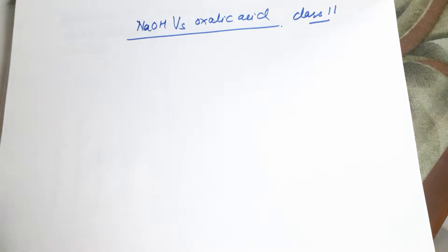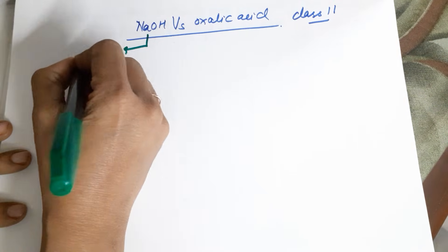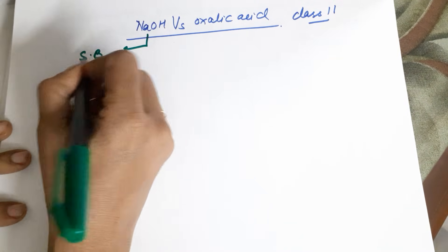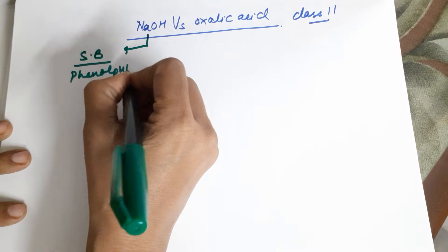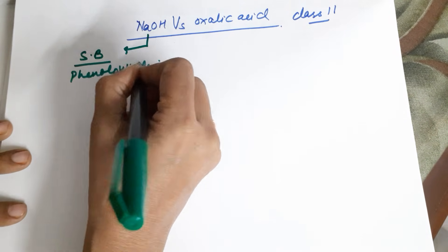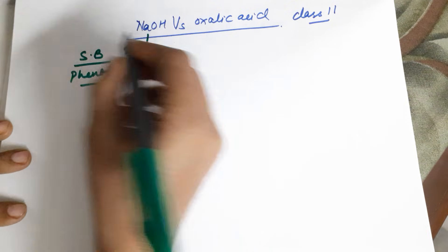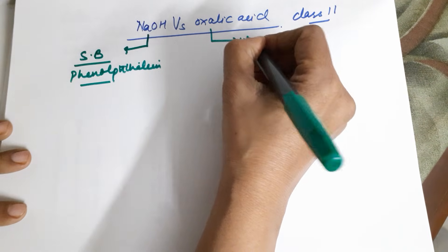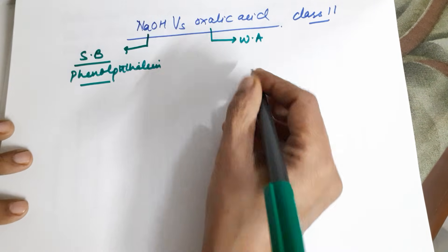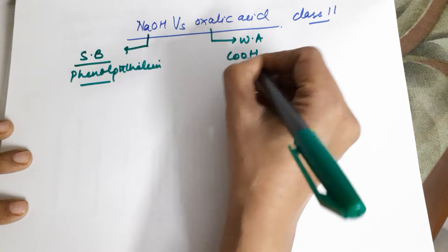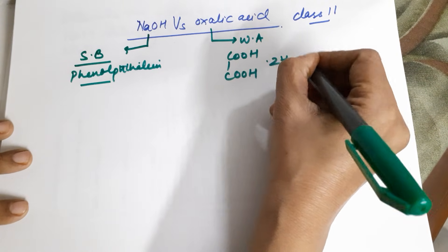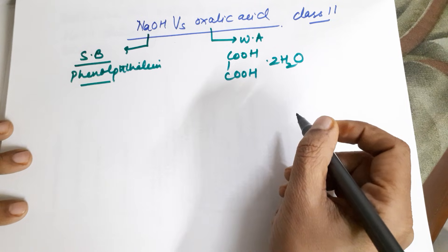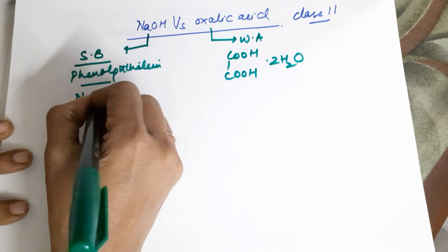Now in this particular titration, your NaOH is the strong base. Since it is the strong base, your indicator used will be phenolphthalein. While oxalic acid is the weak acid, the formula for oxalic acid is COOH. Please don't forget the two water molecules as the water of crystallization, and this is your NaOH.